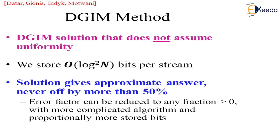A beautiful method was created by four scientists: Datar, Jynioski, Indica, and Motwani — known as the DGIM method. DGIM is a solution that does not assume uniformity. We store order of log-squared n bits per stream. The solution gives an approximate answer with an error of no more than 50%, meaning your approximate answer provides at least 50% accuracy. The error factor can be reduced to any fraction greater than 0, with a more complicated algorithm using proportionally more stored bits.